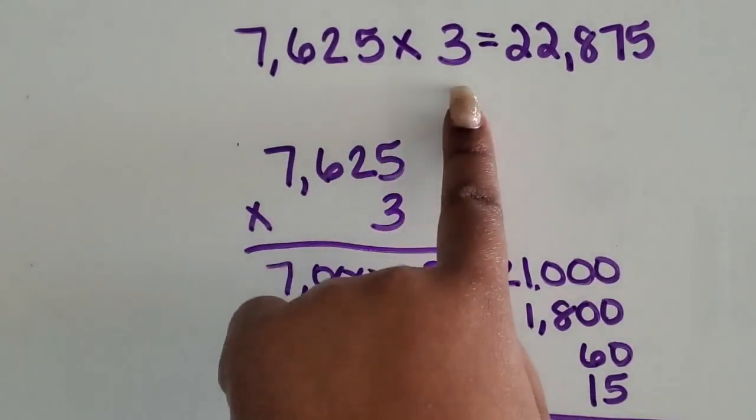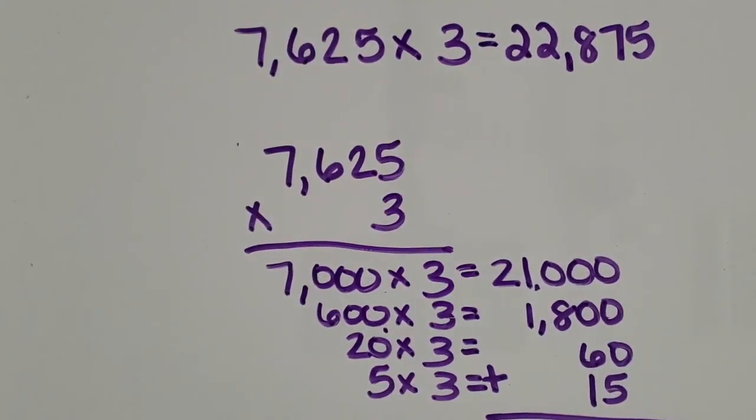We multiplied a four-digit number by a one-digit number using the partial product strategy.